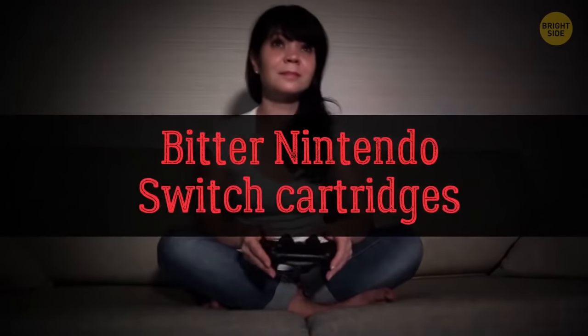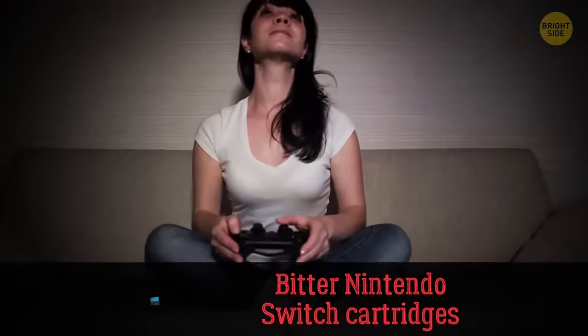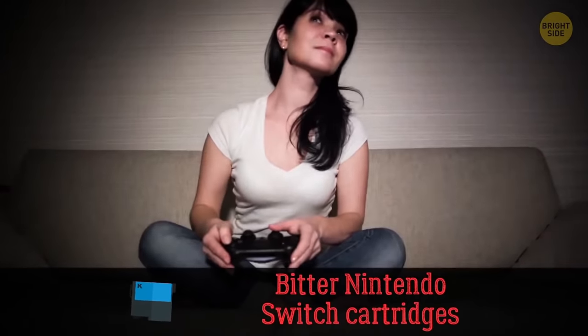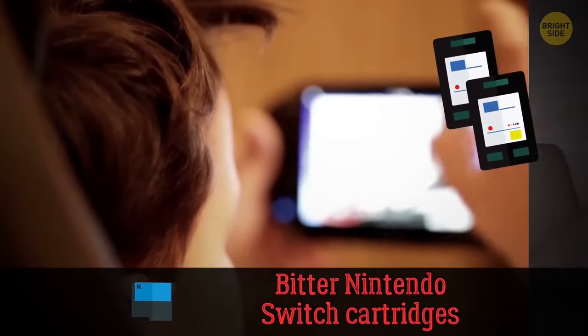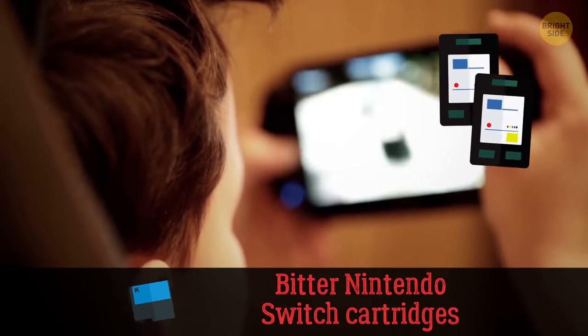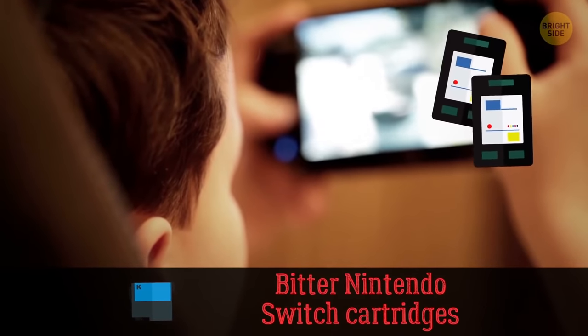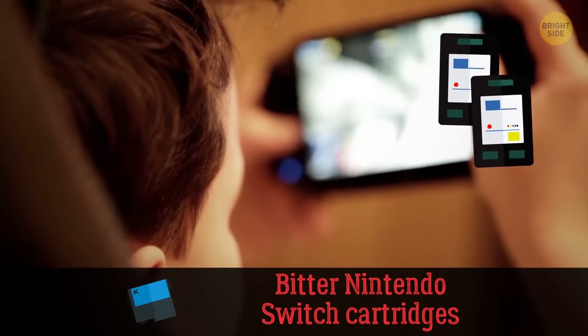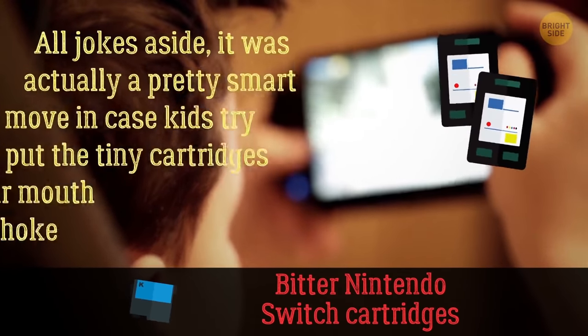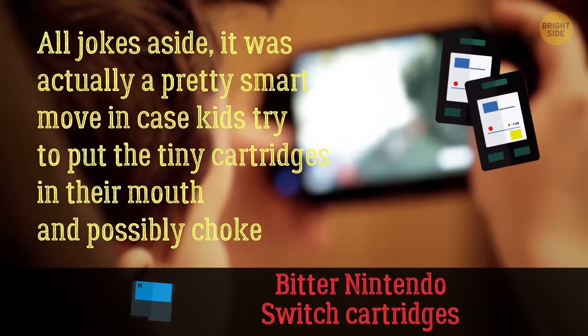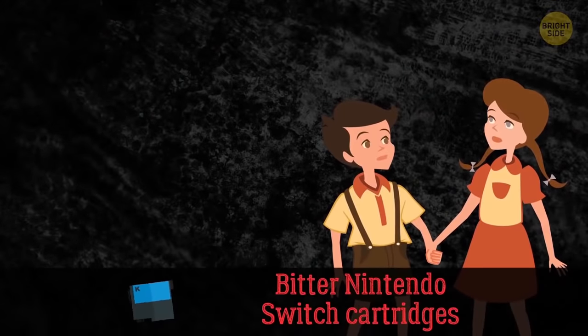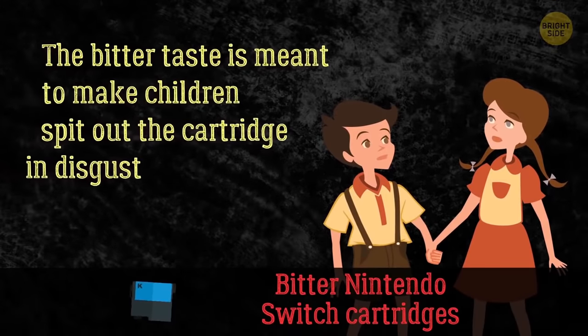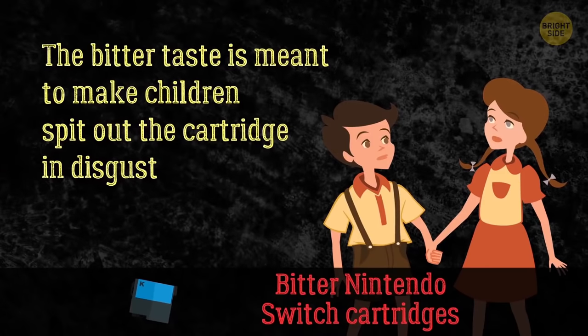So, is your first thought when playing video game consoles to eat the cartridges? Well, apparently, that's what the manufacturers of the cartridges for the Nintendo Switch thought when they decided to coat them with a bitter-tasting non-toxic solution. All jokes aside, it was actually a pretty smart move in case kids tried to put the tiny cartridges in their mouth and possibly choke. The bitter taste is meant to make children spit out the cartridge in disgust.